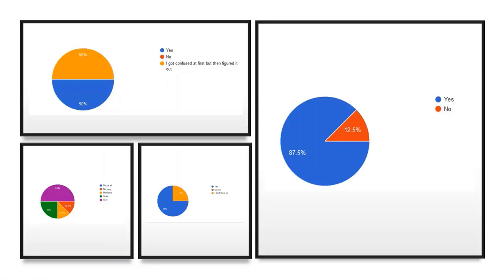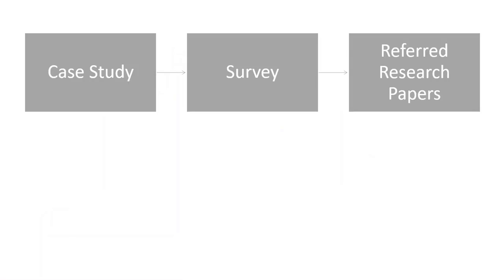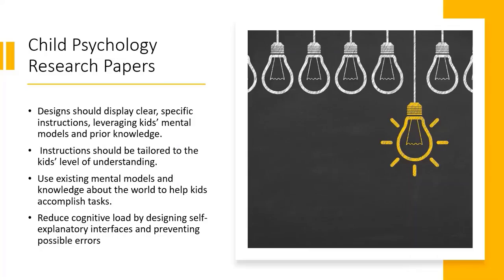The results obtained from the survey were analyzed, and we also read a lot of research papers based on child psychology to better understand the design to be used for a child-centric online learning platform. Some of the insights we found were: design should display clear, specific instructions, leveraging kids' mental models and prior knowledge; instructions should be tailored to kids' level of understanding; and we should use existing mental models and knowledge about the world to help kids accomplish tasks.